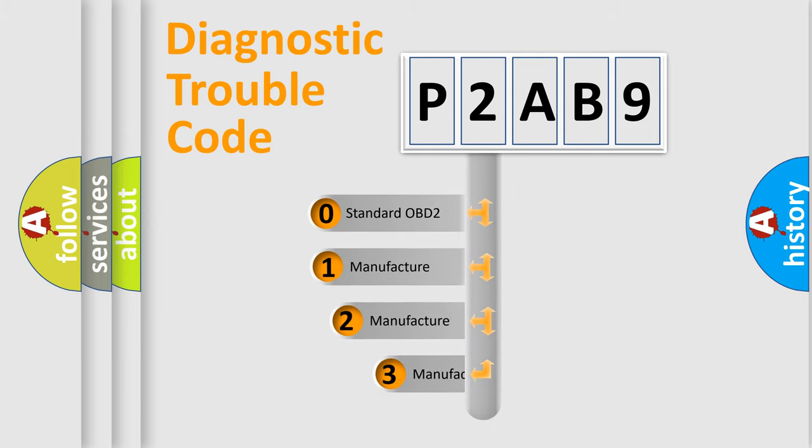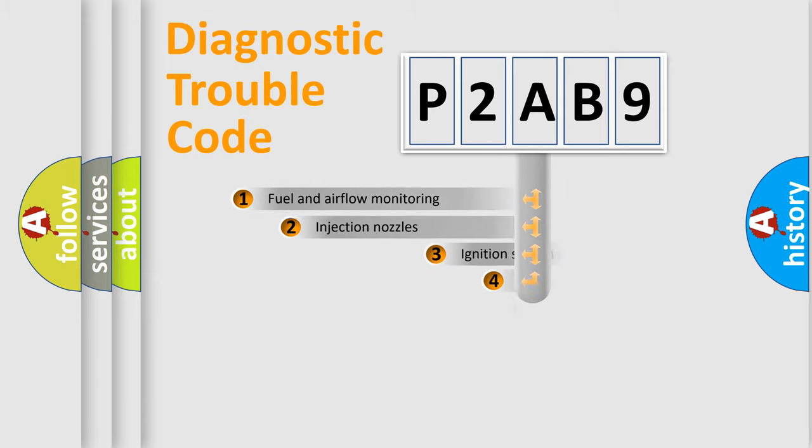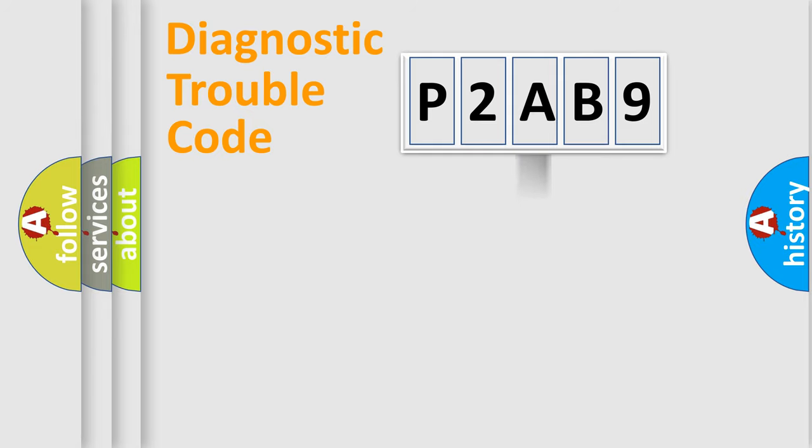If the second character is expressed as zero, it is a standardized error. In the case of numbers one, two, or three, it is a manufacturer-specific expression of the car specific error. The third character specifies a subset of errors. The distribution shown is valid only for the standardized DTC code.